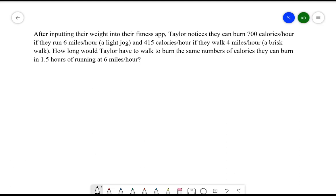After inputting their weight into their fitness app, Taylor notices they can burn 700 calories an hour if they run 6 miles per hour, which is a light jog, or they can burn 415 calories per hour if they walk 4 miles an hour, which is a brisk walk. How long would Taylor have to walk to burn the same number of calories they can burn in 1.5 hours of running at 6 miles per hour?